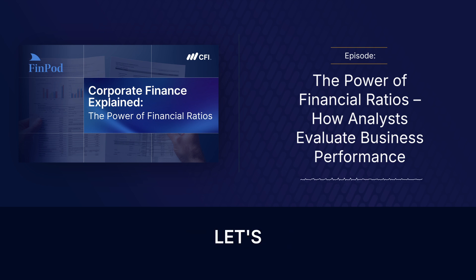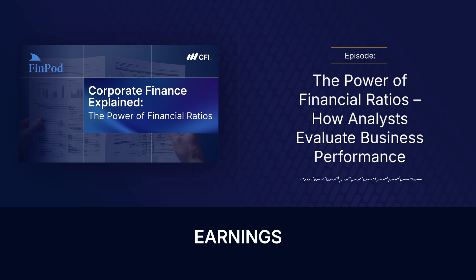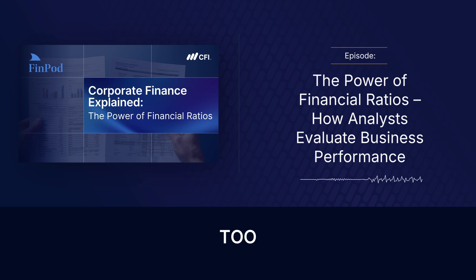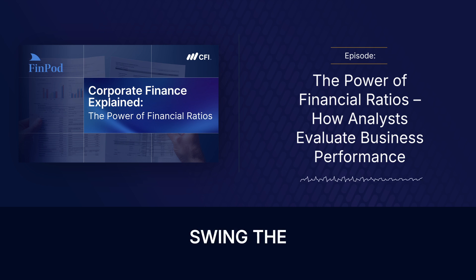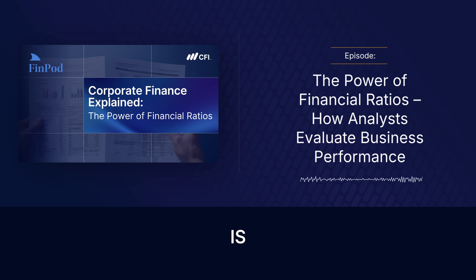Which ratios do pros find most overrated or misunderstood? The price-to-earnings (P/E) ratio is probably the most overrated. It's quoted everywhere — the headline metric — and that's the problem. It's too simple, too easily distorted. Accounting adjustments, one-off gains or losses, even normal business cycles can swing earnings around wildly, making the P/E look artificially cheap or expensive. It gives you a very broad-strokes picture but very little deep analytical insight on its own — often more noise than signal.